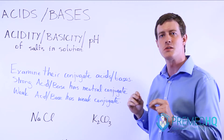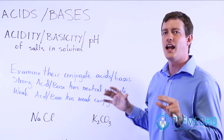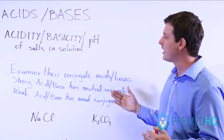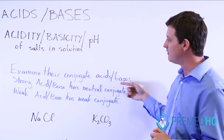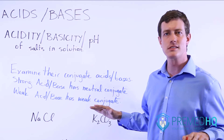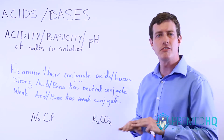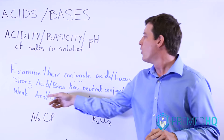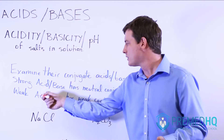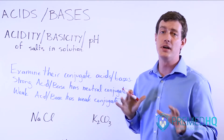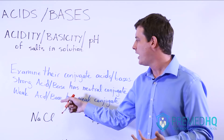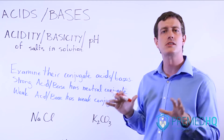Remember, a salt is comprised of two ions, and those ions will either be acidic, basic, or neutral. The best way to evaluate that is by looking at what they are the conjugates of. Strong acids have neutral conjugate bases, and strong bases have neutral conjugate acids. Whereas a weak acid or base has a conjugate that is weak in the other direction — a weak acid will have a weak conjugate base, but that conjugate base is still somewhat basic. And a weak base will have a weak conjugate acid, but it is still somewhat acidic.